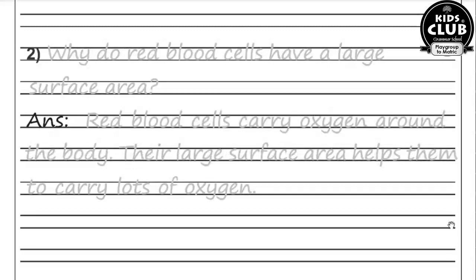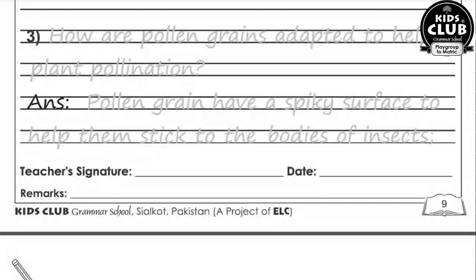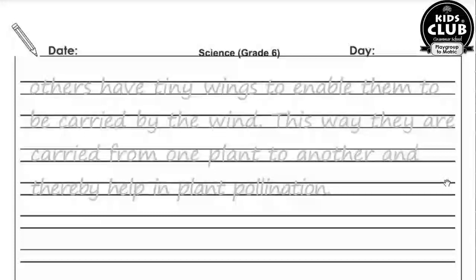Question number three: How are pollen grains adapted to help plant pollination? Pollen grains have a spiky surface to help them stick to the bodies of insects. Others have tiny wings to enable them to be carried by the wind. This way they are carried from one plant to another, thereby helping in plant pollination. Kuch pollen grains par spikes lage hote hain insects par ja kar attached ho sake, aur kuch par wings hoti hain so that the wind can carry them.